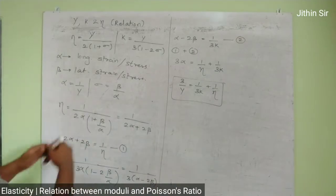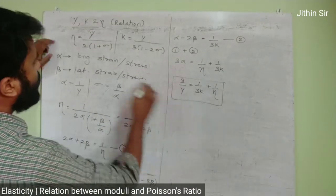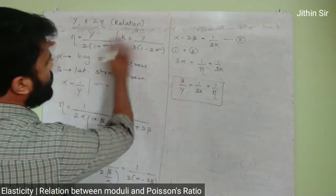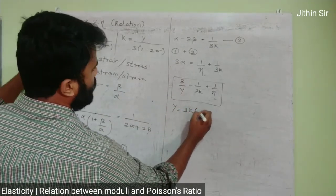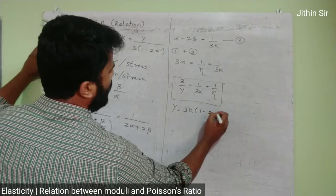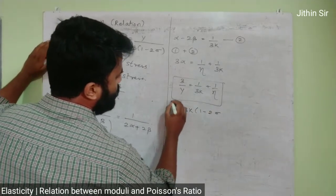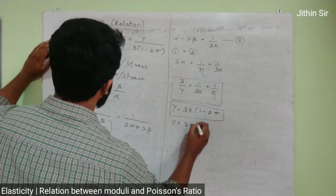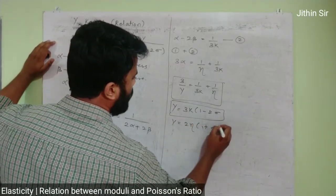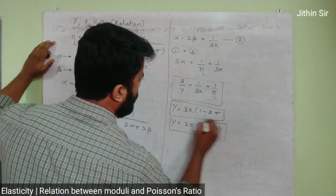My dear children, these three formulas are very important. The first formula: y equals 3k times 1 minus 2 sigma. This is one important formula. Another formula: y equals 2 eta times 1 plus sigma. These formulas are important.